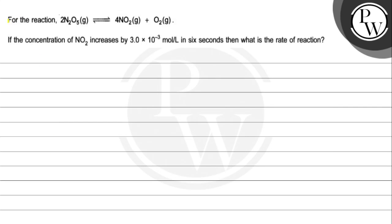Hello, let's see this question. For the reaction, 2N2O5(g) gives 4NO2(g) plus O2(g). If the concentration of NO2 increases by 3×10^-3 mol/L